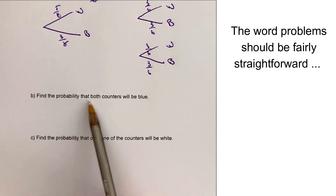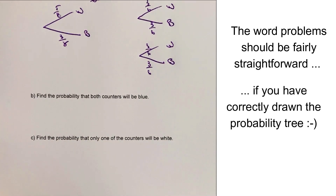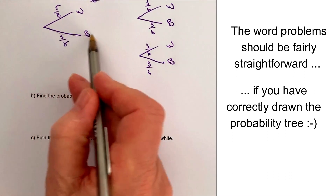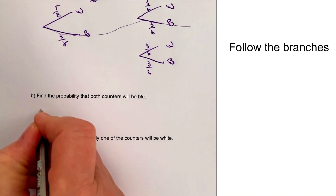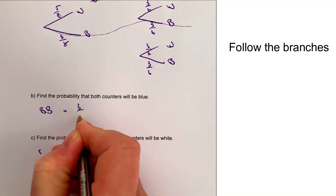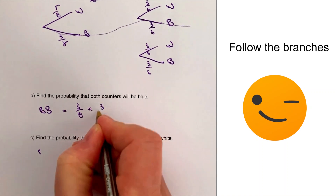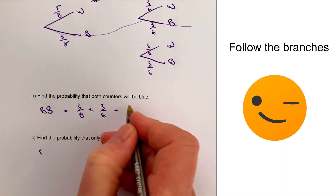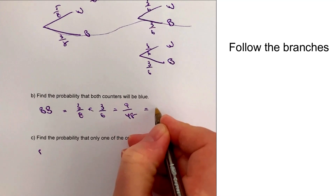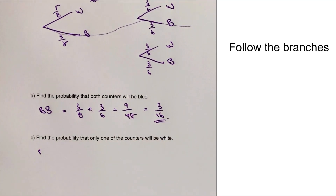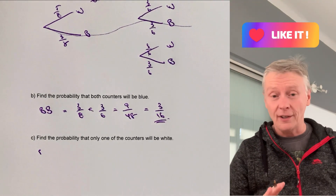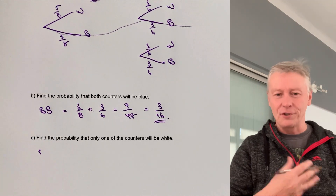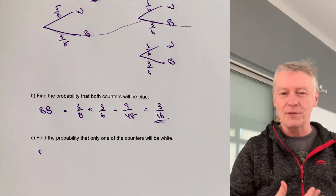The first part asks us to find the probability that both counters will be blue. Following the blue-blue branch, that's 3 over 8 multiplied by 3 over 6, which gives us 9 over 48, and that reduces to 3 sixteens. Unless the question says to give it in simplest form, you don't have to reduce fractions, but it's good practice.